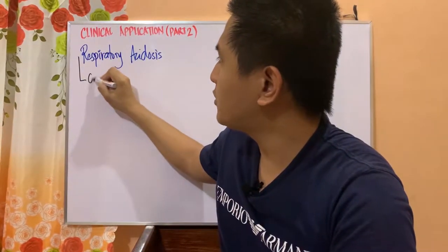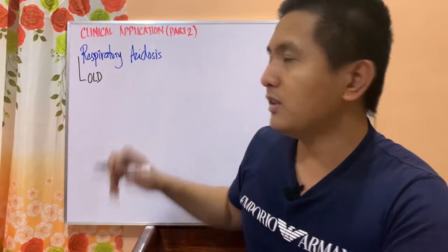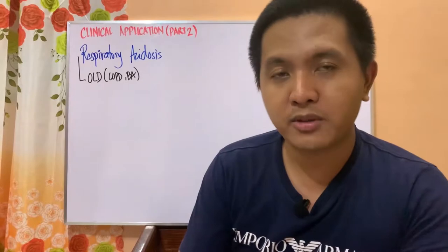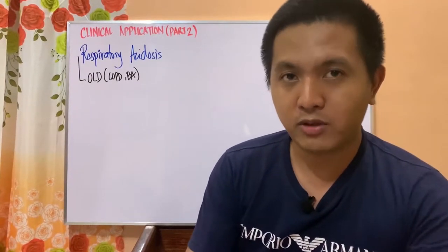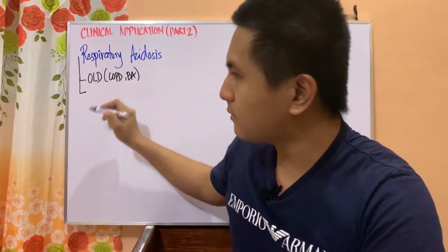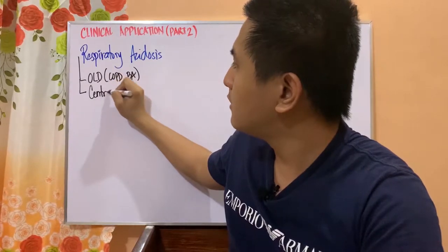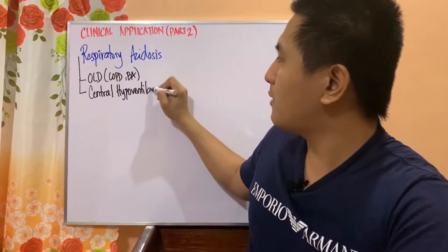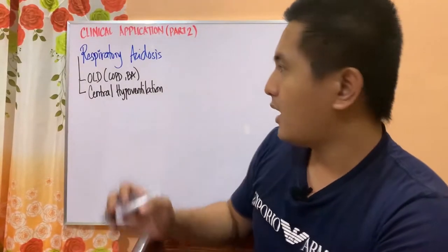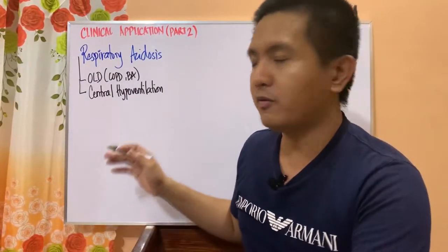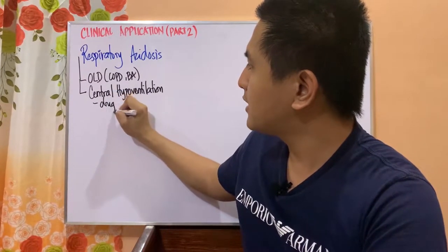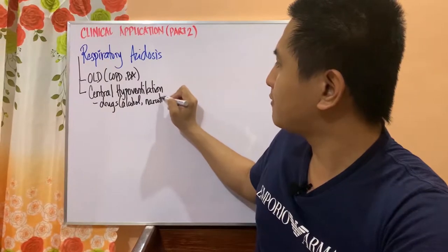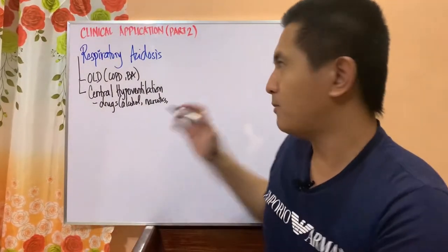We can summarize the causes into the following. First, obstructive lung disease — particularly COPD and asthma, which are the two most common obstructive diseases you will encounter in your respiratory subjects. Second, another etiology is when the patient has central hypoventilation or anything that lowers the patient's alveolar ventilation. Among the different causes of central hypoventilation, the most common clinically are drugs such as alcohol, narcotics, or midazolam and diazepam — your benzodiazepines.